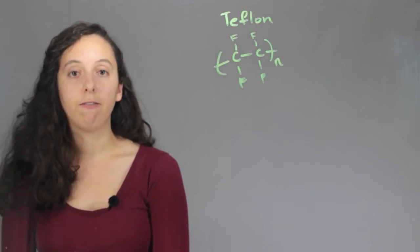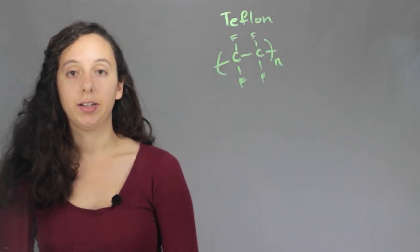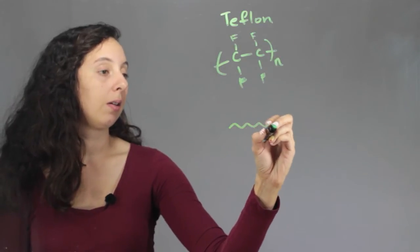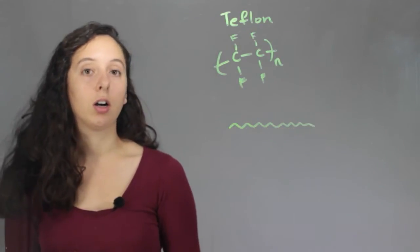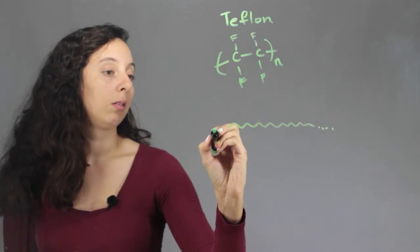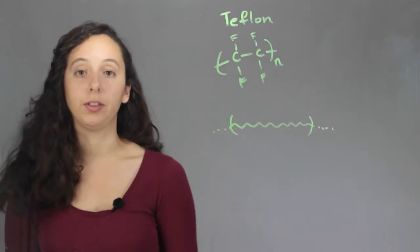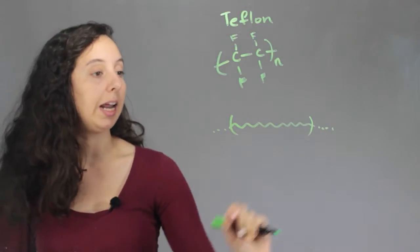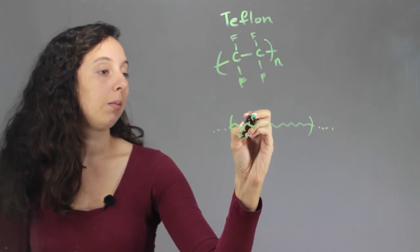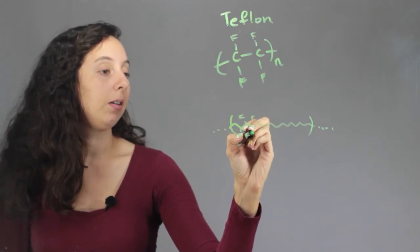And so if we looked at Teflon, this is all it is. It would just be a super long carbon chain and it would just keep on going. So we use a little parentheses to show it's repeating and then every single thing would be a fluorine. I'm not going to draw them all out, but you get the picture.